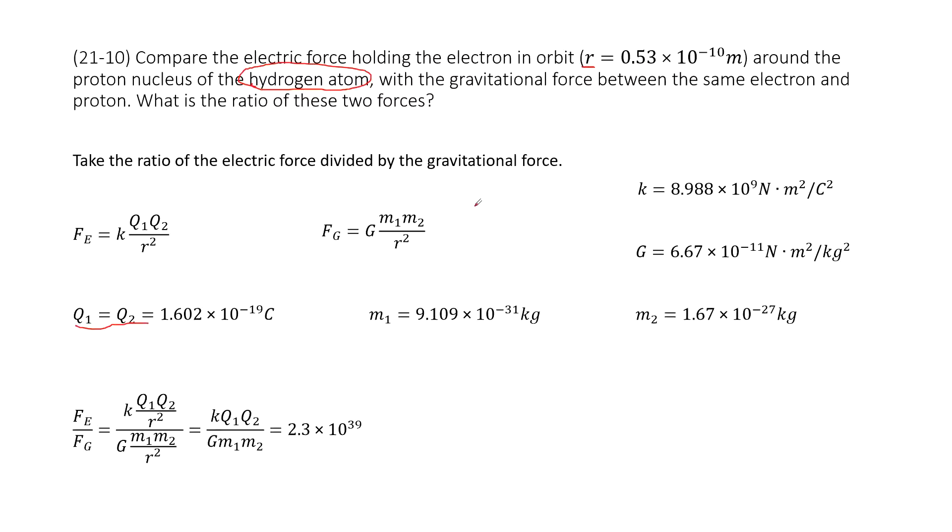And also we know when we consider gravitational force, we need to consider the mass for these two objects. We have the mass for the electron m1 and the mass for the proton m2, these are constants.